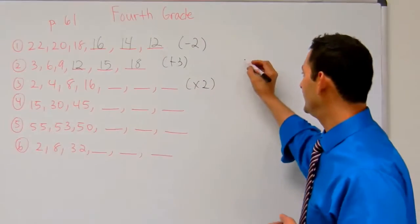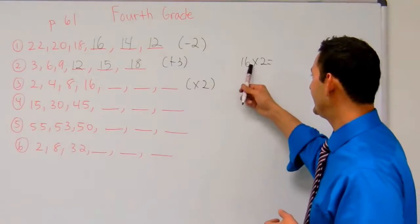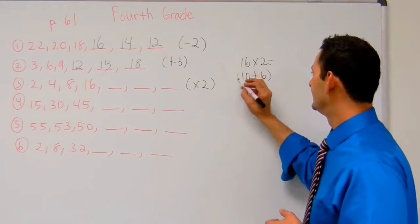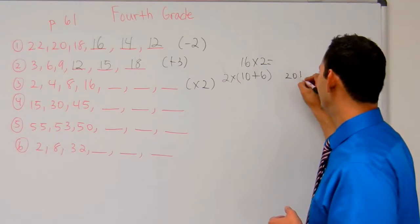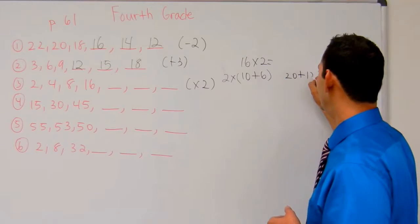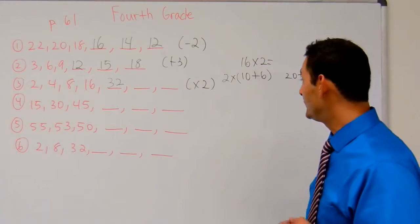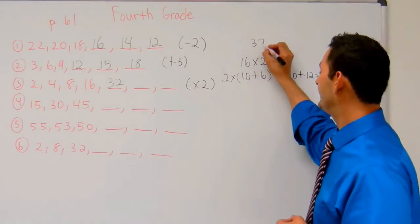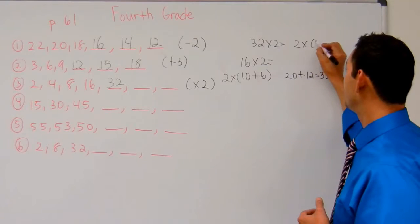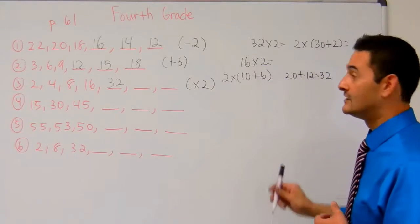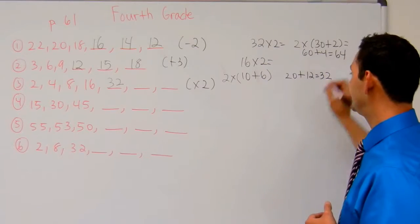So 16 times 2 equals, I can break this up. 2 times 10 plus 6. So that's going to be 2 times 10, that's 20, plus 2 times 6, that's 12. That's going to be 32. Now 32 times 2, I'm going to use the distributive property. I've got 2 times 30 plus 2 equals 2 times 30, that's 60, plus 2 times 2 is 4. That's going to be 64.